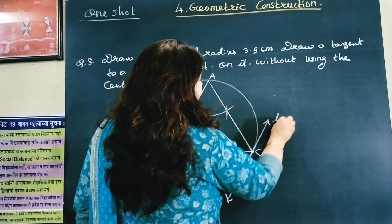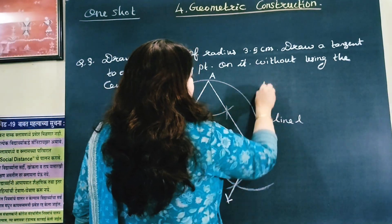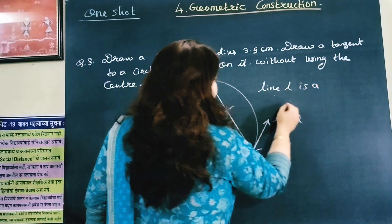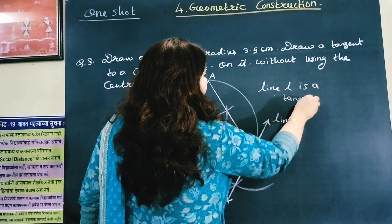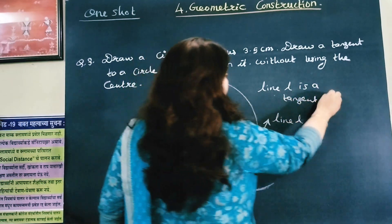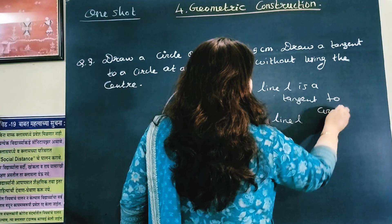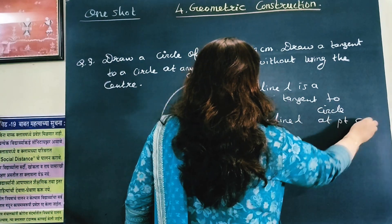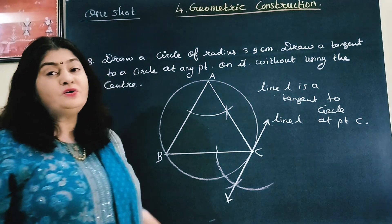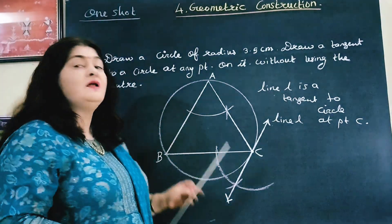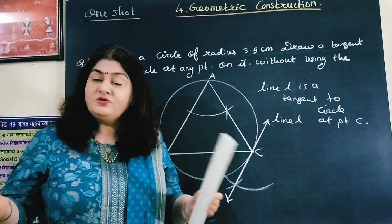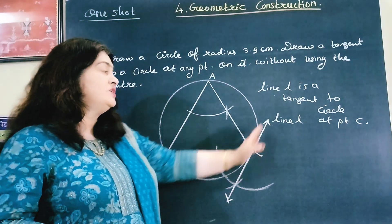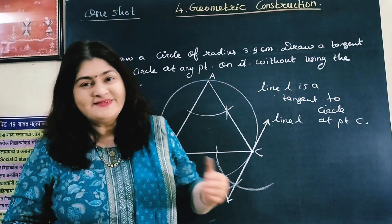Line L is a tangent to the circle at point C, and here we have not used the center of the circle. Without using the center of the circle, we have drawn the tangent to the circle at point C.